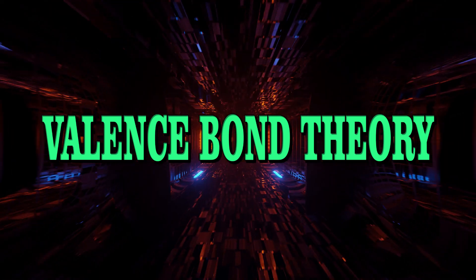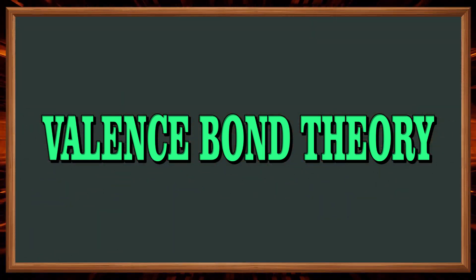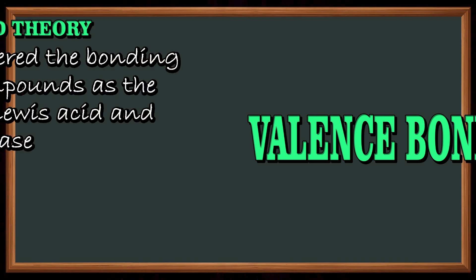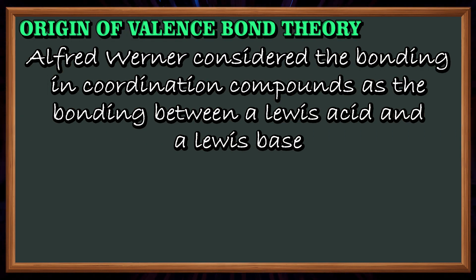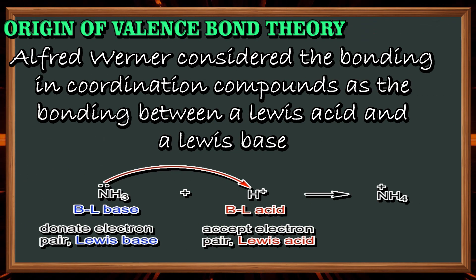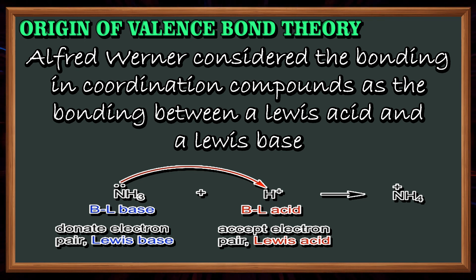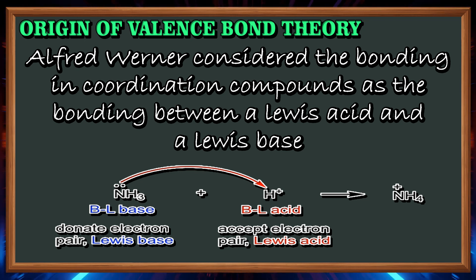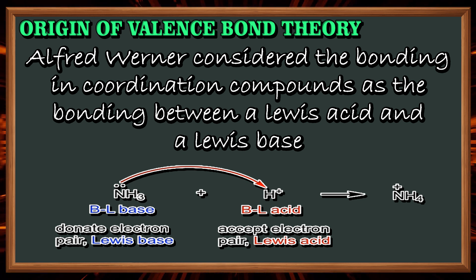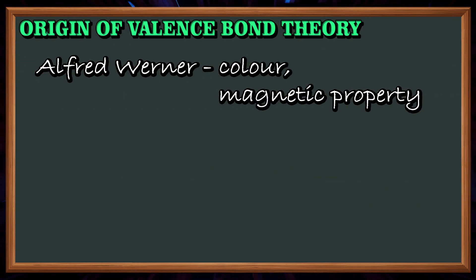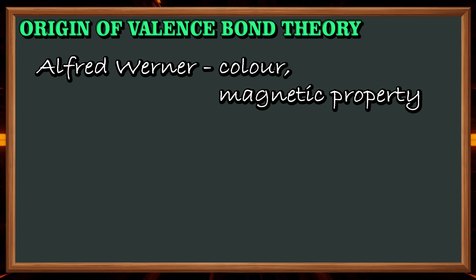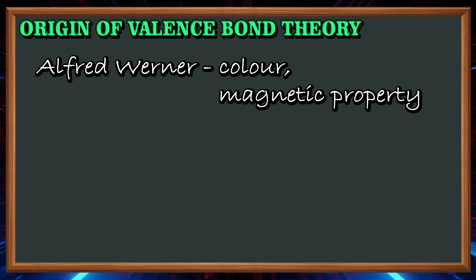Welcome to my channel. Today I am going to explain the topic Valence Bond Theory. The origin of Valence Bond Theory: Alfred Werner considered the bonding in coordination compounds as the bonding between a Lewis acid and a Lewis base. The Lewis base donates the electron pair and the Lewis acid accepts it. Werner's approach is useful in explaining some observed properties of coordination compounds, however properties such as color and magnetic properties could not be explained.